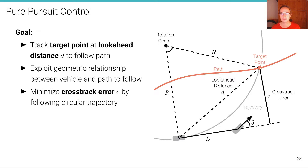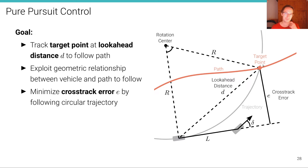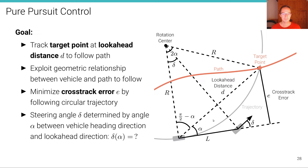We have a line connecting the target point and the rotation center with length r — the radius of the gray circle — and the line connecting the rear wheel with the rotation center also has length r, because both the rear wheel and the target point lie on that circle. The circle passes through the rear wheel and the target point.